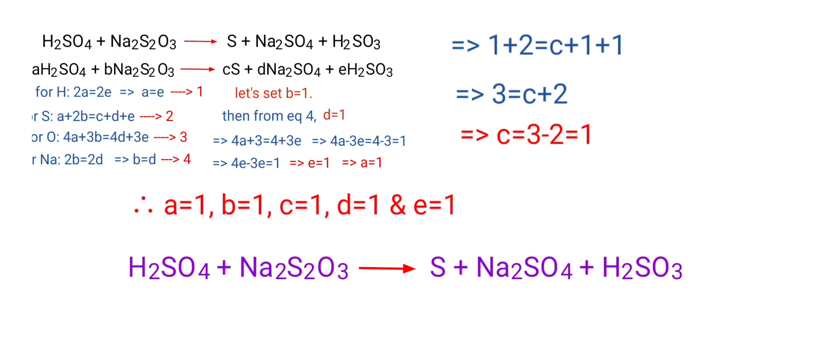Therefore, H2SO4 plus Na2S2O3 gives us S plus Na2SO4 plus H2SO3. So the equation is already balanced.